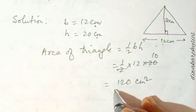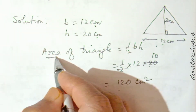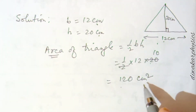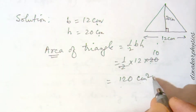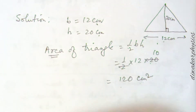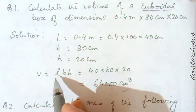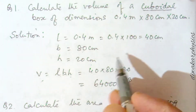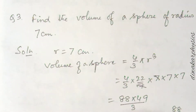Substitute the values and solve. Since we are finding area, the unit is square centimeter. If you write the wrong unit, your answer will be taken as wrong. In the previous question, the volume answer was 64,000 and the unit was centimeter cube. Unit of volume is centimeter cube or meter cube; unit of area is centimeter square.